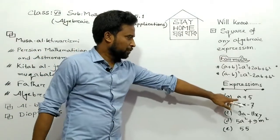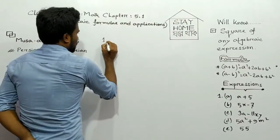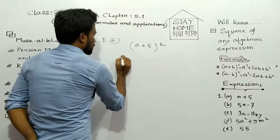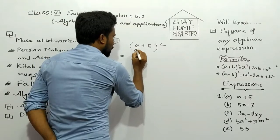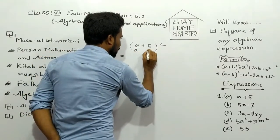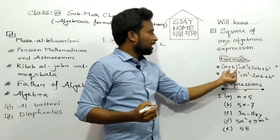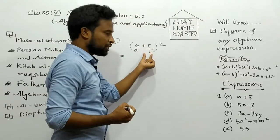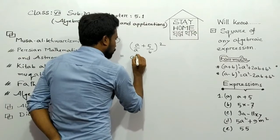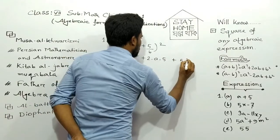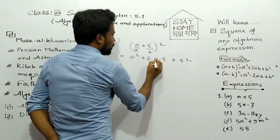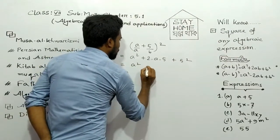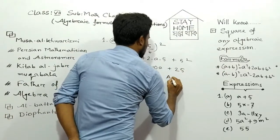Our first expression is (A + 5). We have to take the whole square. We can see here A is our A and 5 is our B. So we apply (A + B)² = A² + 2AB + B². That means A² plus 2A into 5 plus 5 squared. So we can write here A² + 10A + 25. This is our answer.